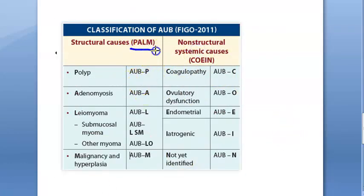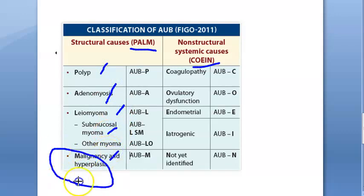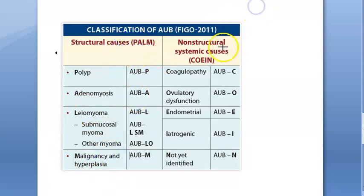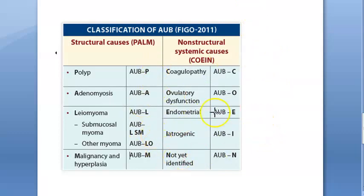These causes have been classified using the PALM-COIN classification. PALM represents structural causes: P — Polyp, A — Adenomyosis, L — Leiomyoma (submucosal or other), M — Malignancy. COIN represents non-structural causes: C — Coagulopathy, O — Ovulatory dysfunction, I — Endometrial, I — Iatrogenic, N — Not yet identified.